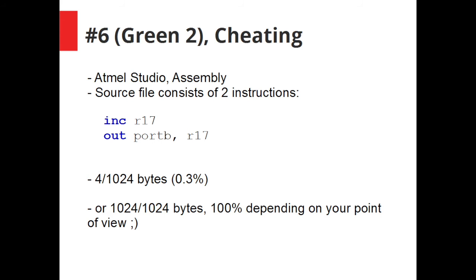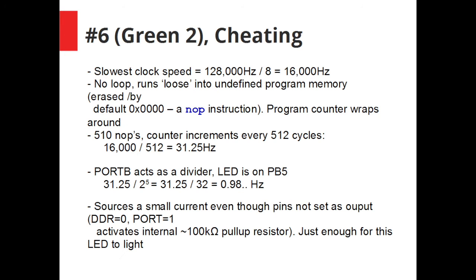The reason this works is there is no loop. So as soon as it's finished executing those two instructions it will go through unprogrammed memory. And by default if you've erased the chip the unprogrammed memory will just be full of zeros. And zero, 16 bit zero, is an op code for no op. So we'll go through 510, 511 no ops after it's completed that which act as a delay before the program counter rolls over and it returns back to the first instruction again which increments the register.